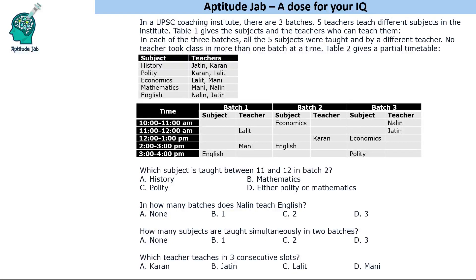Welcome to Aptitude Jab. This is a puzzle: in a UPSC coaching institute there are three batches — batch 1, 2, and 3 — and five teachers that teach different subjects. The first table gives the subjects and the teachers who can teach them. Each subject can be taught by two teachers. In each of the three batches, all five subjects are taught by different teachers.